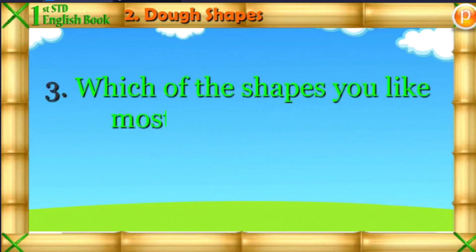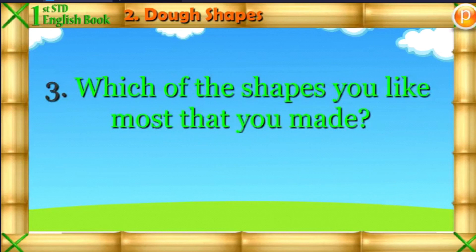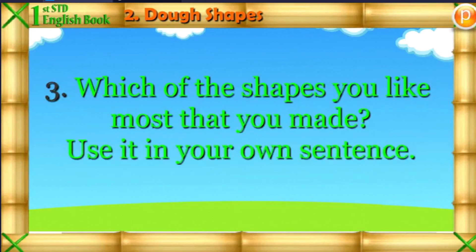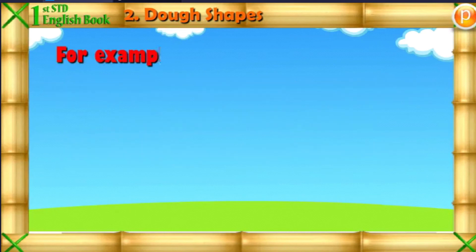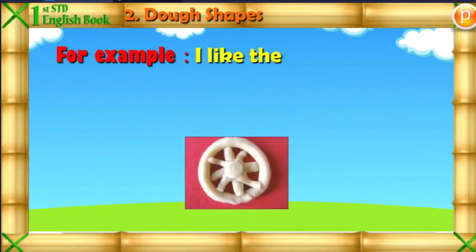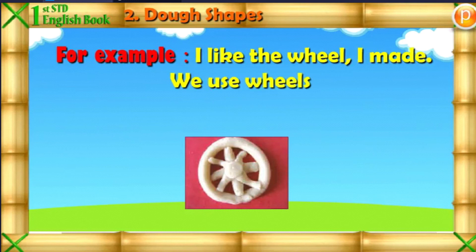Which of the shapes you like most that you made? Use it in your own sentence. For example, I like the wheel I made. We use wheels to run a car.